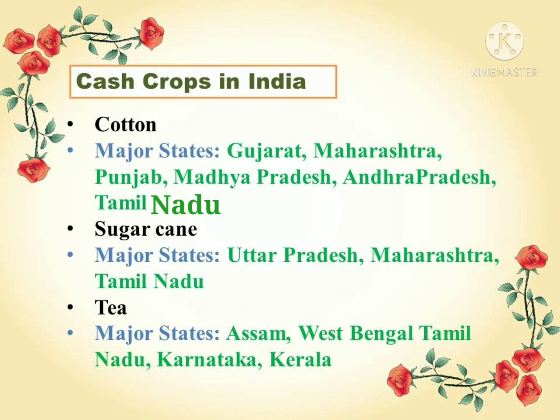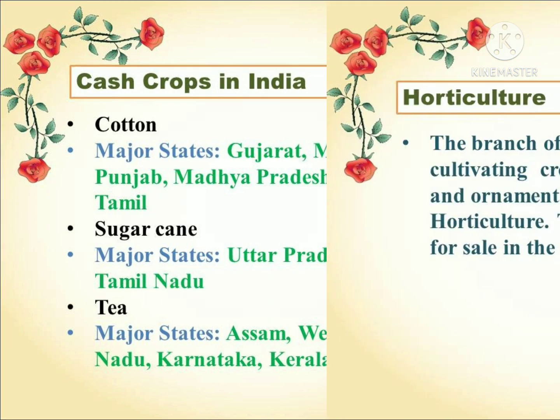Let us see some of the cash crops of India and where they are grown. Some of the states where cotton is grown are Gujarat, Maharashtra, Punjab, Madhya Pradesh, Andhra Pradesh, and Tamil Nadu. Sugarcane is grown in Uttar Pradesh, Maharashtra, and Tamil Nadu. Tea is grown in Assam, West Bengal, Tamil Nadu, Karnataka, and Kerala.